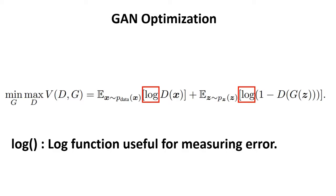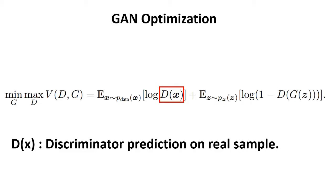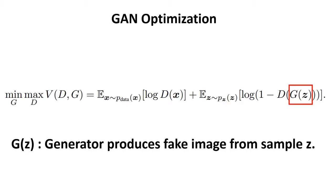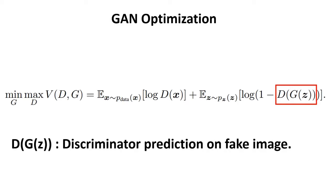D of x is what the discriminator predicts on the real samples. z of p_z means a sample z taken from the set of latent vectors. G of z is using the generator to generate a fake image using the sample z. Then D of G of z is what the discriminator predicts on the generated image.